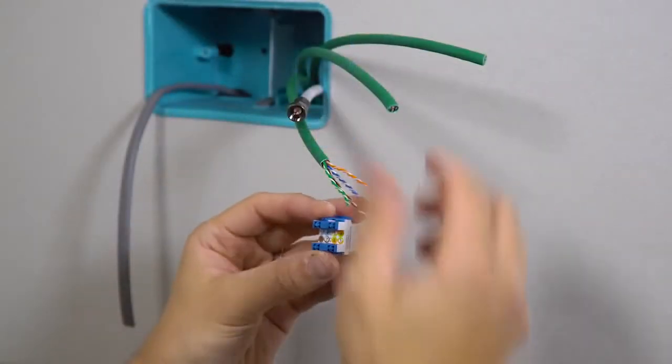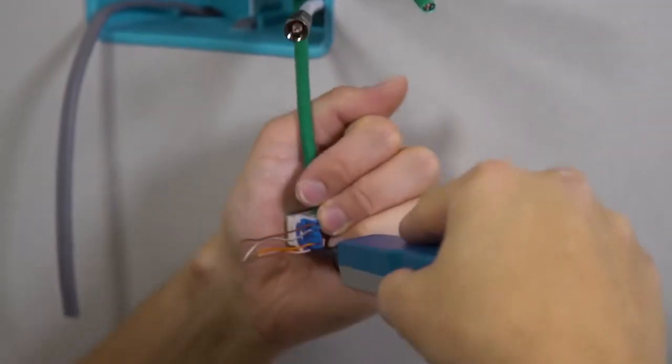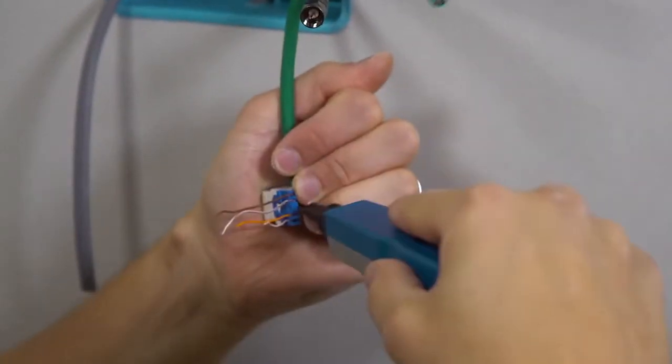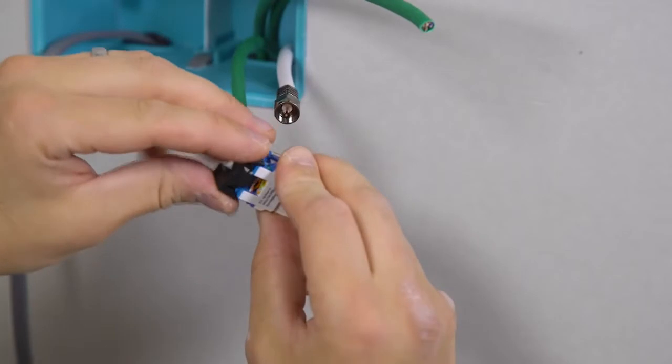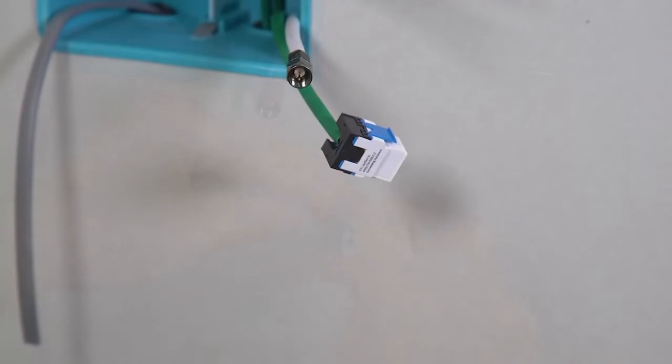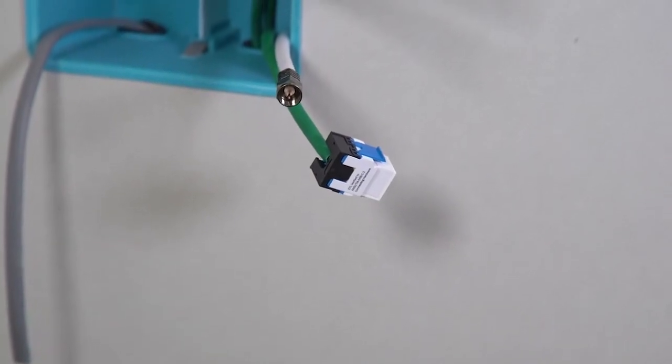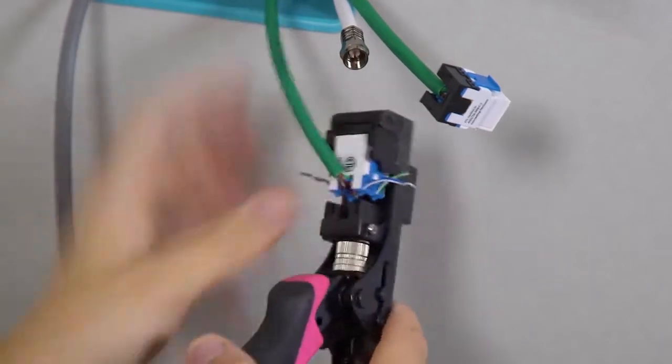Our RJ45 modules are designed for quick and easy installation. Termination is via a 110 IDC punch down tool, or our keystone tool for super fast installation.